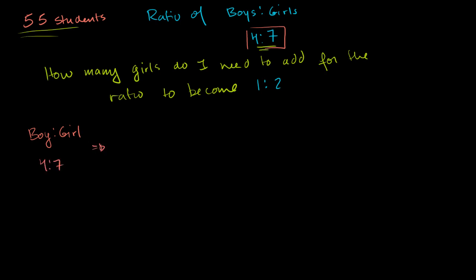That means, for every 11 students, there are 4 boys and 7 girls. That's what this ratio tells us.